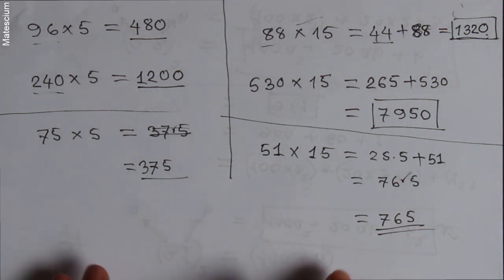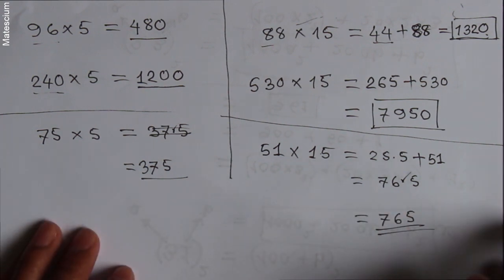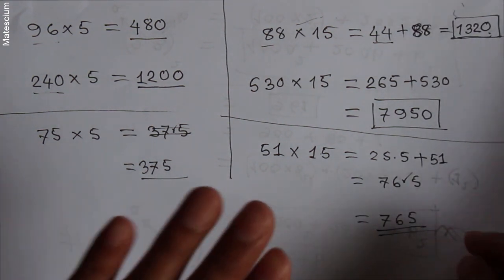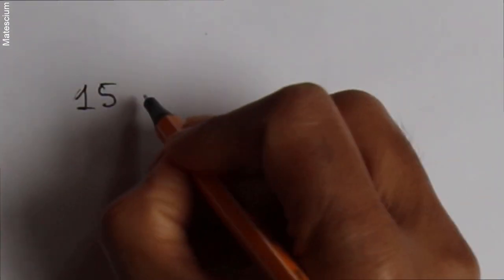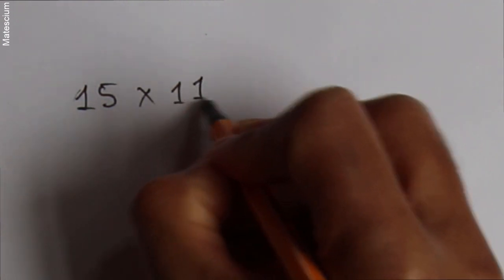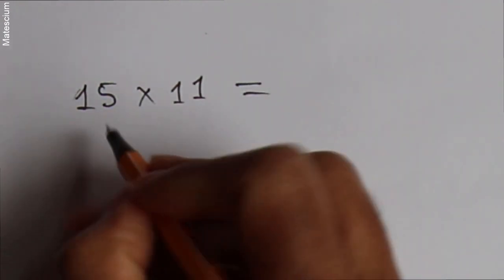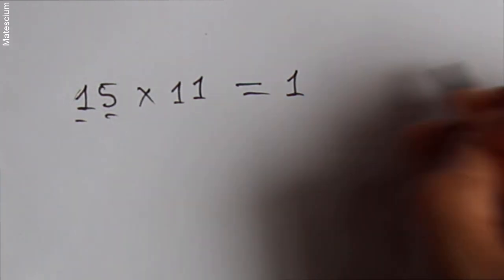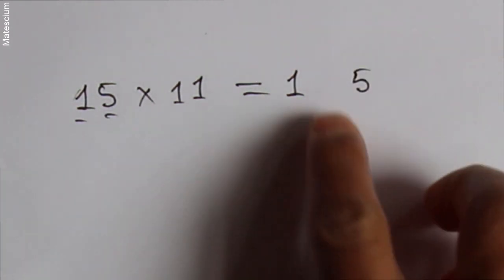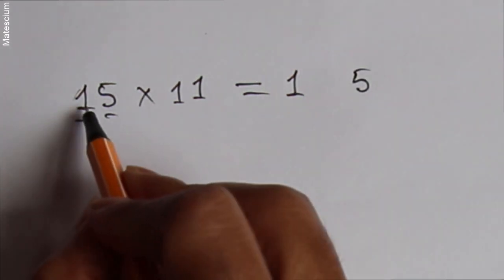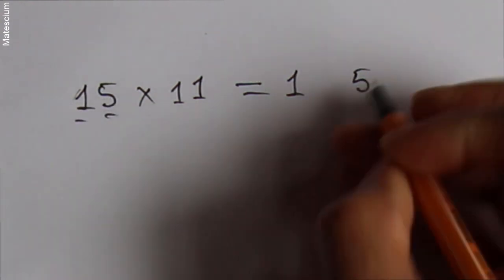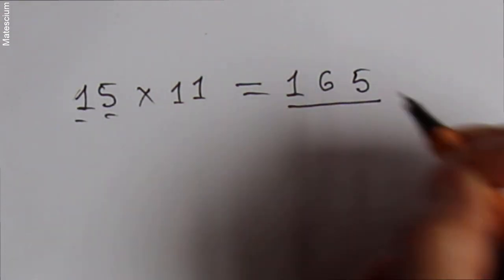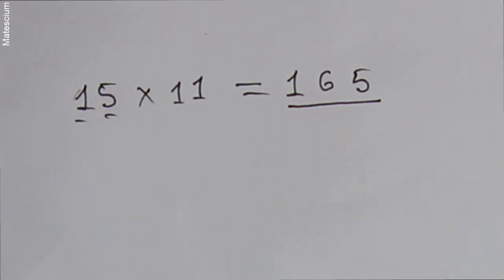That's why I told you — if you know the right tricks, you can multiply any number very simply. I have another very simple trick to show you. Let's say 15 multiplied by 11. What you have to do is write 1 here and 5 here, keeping a certain distance, and add these two numbers: 5 plus 1 is 6. That means 165 is the answer of 15 times 11.